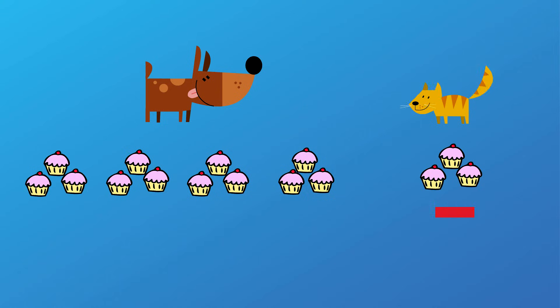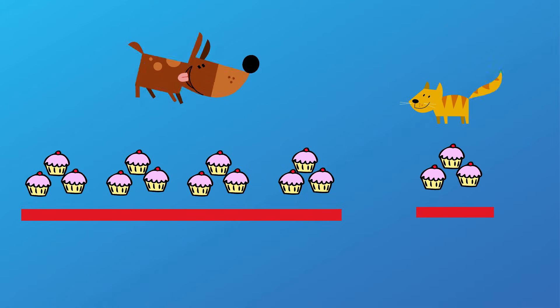Ginger had three treats. Rufus had 12. Let's break Rufus's treats into groups of three like Ginger's to compare them.